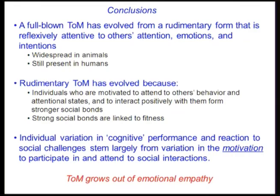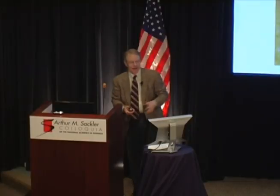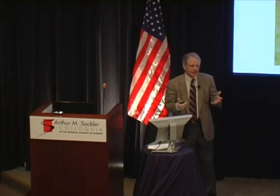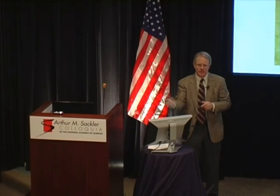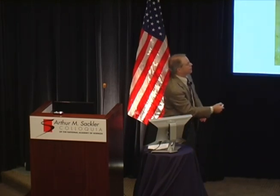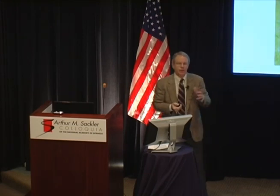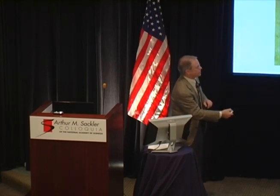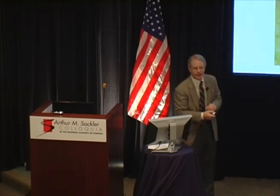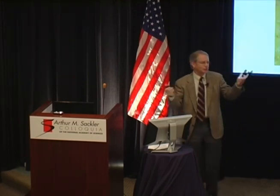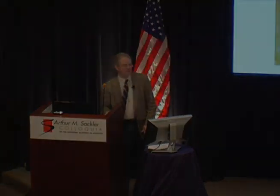To conclude: a full-blown theory of mind has evolved from a rudimentary form reflexively attentive to others' attentions, emotions, and intentions — widespread in animals and still visible in humans through contagious yawning and imitative interactions. A rudimentary theory of mind evolved because individuals motivated to attend to each other's behavior and attentional states form stronger social bonds, and those social bonds are directly linked to fitness. Individual variation in what we think of as cognitive performance stems largely from variation in motivation to participate in social interactions. The best way to understand the evolution of theory of mind is to argue that it grows out of emotional empathy, because emotional empathy is crucial to social bond formation, which in turn is crucial to fitness. Finally, many dichotomous differences between theory of mind in animals versus humans arise from testing conditions — field studies reveal far more about how and why theory of mind evolved, though such research is currently being eliminated from NIH funding.